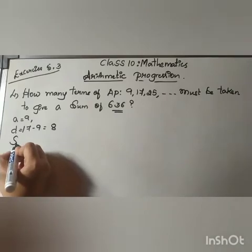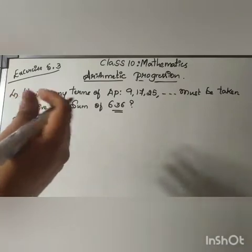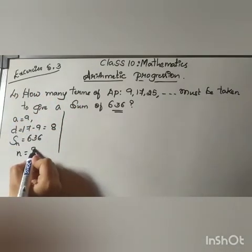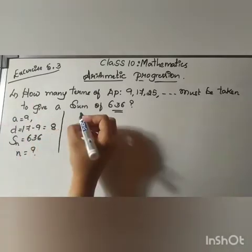That means Sn equals 636. How many terms? That is, we don't know what is the value of n. So we have to find out n. From the given question, we have to use the formula for sum of n terms of a given AP.